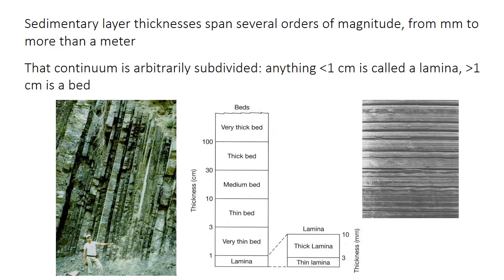Sedimentary rocks are nearly always layered at some scale at least. As we saw in the previous set of slides, that layering arises because of changes in the flow velocity, and therefore changes in the type of sediment that it's able to transport. The thicknesses of sedimentary layers can range from millimeter scale, or even less, to several meters, although most are on the order of a few centimeters to maybe a meter in thickness.